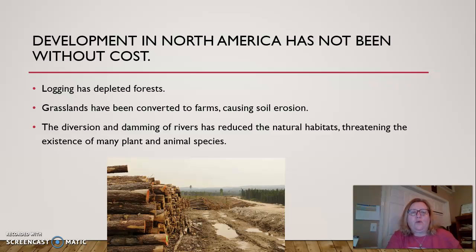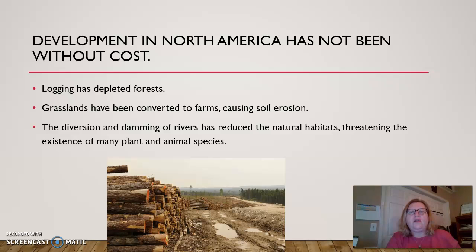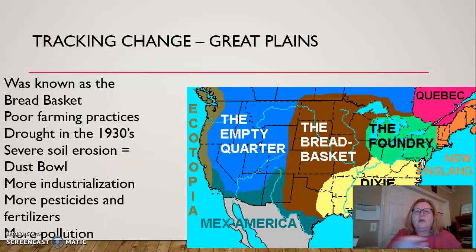It has not been without cost, though. Logging has depleted the forest. Grasslands have been converted to farms, causing soil erosion. Irresponsible logging can cause soil erosion too, because the roots of the trees aren't there to hold the soil in, and that can cause landslides on the mountainsides. The diversion and damming of rivers has reduced natural habitats, threatening the existence of many plant and animal species.